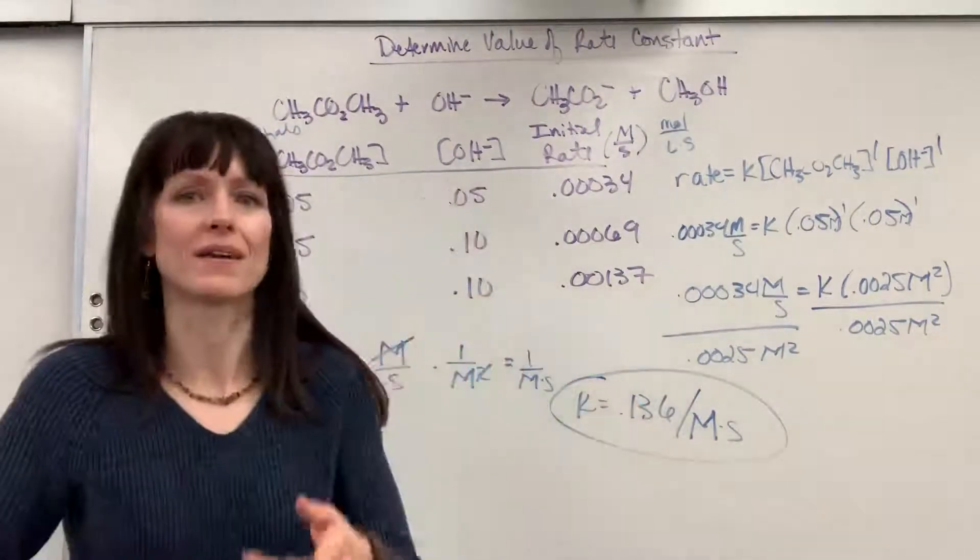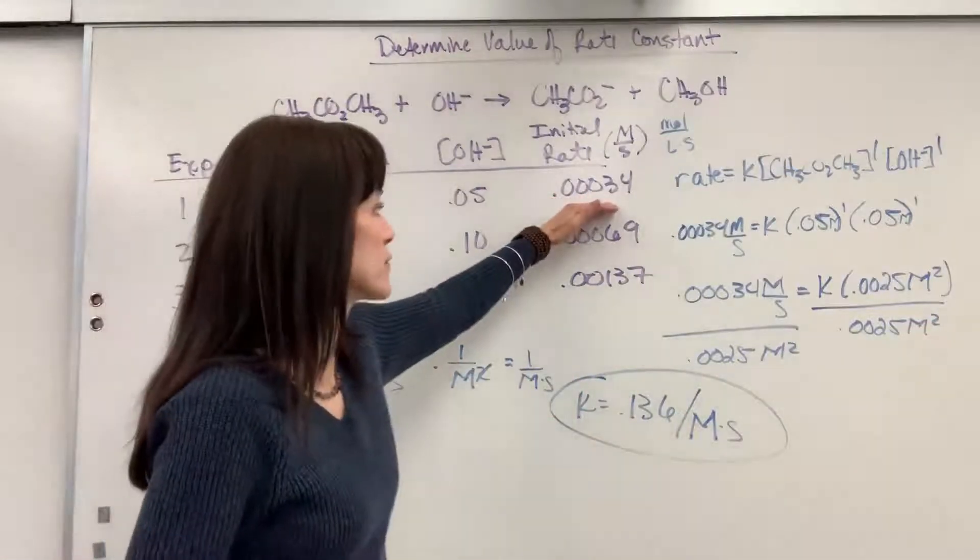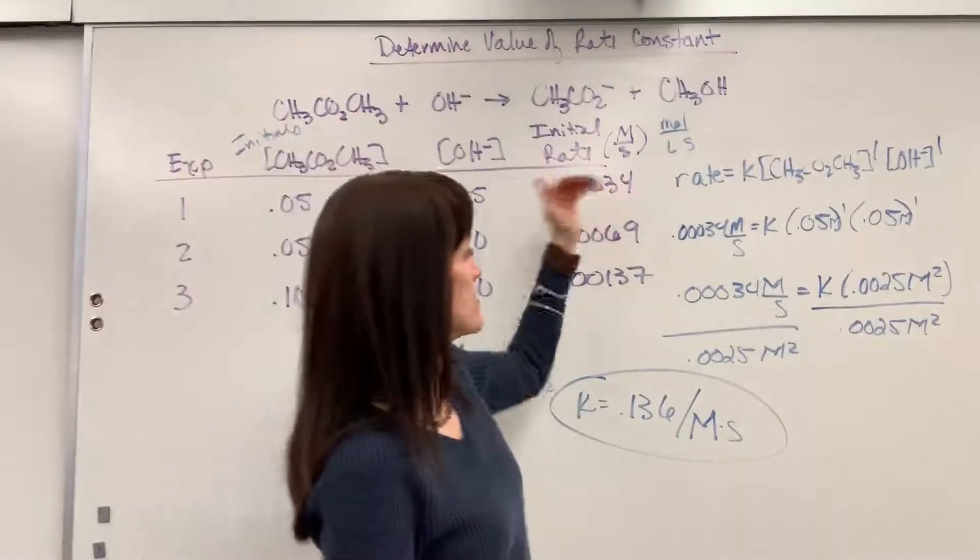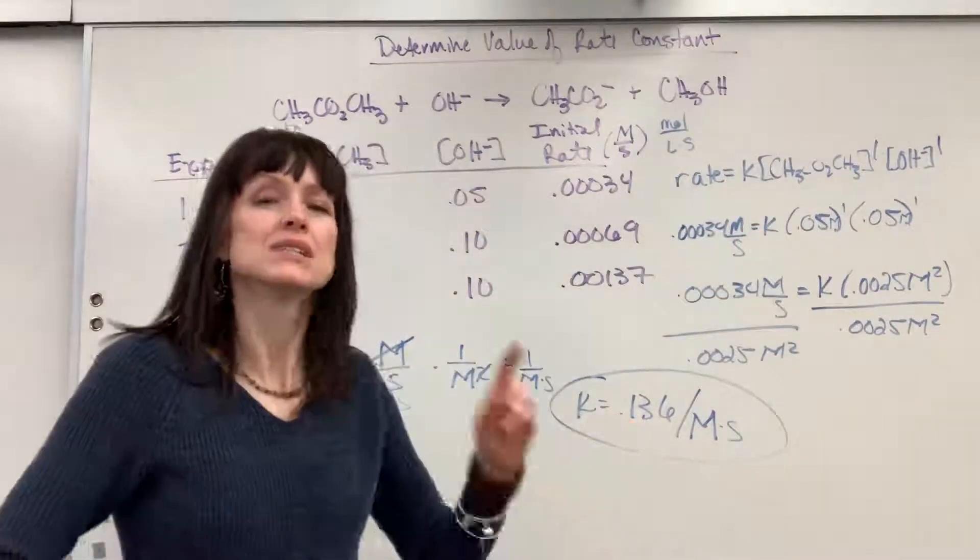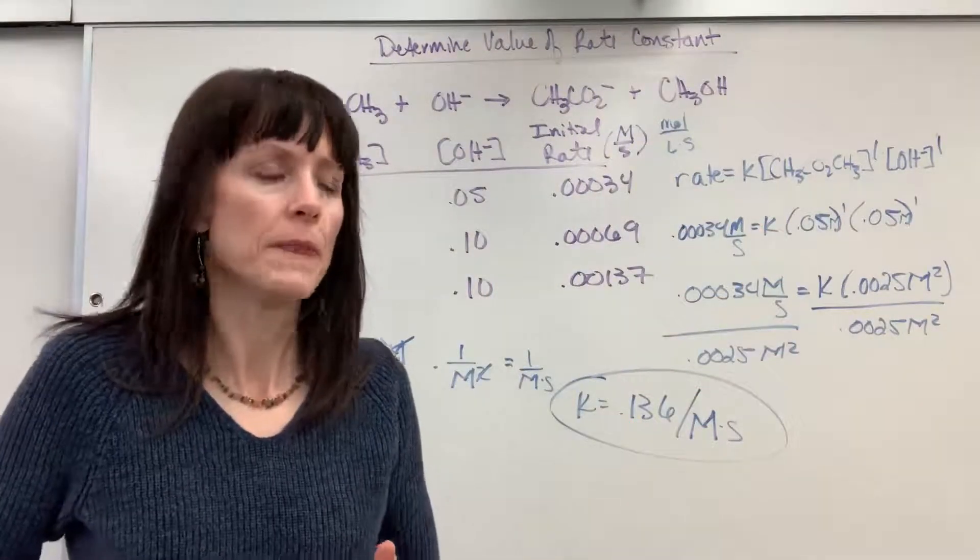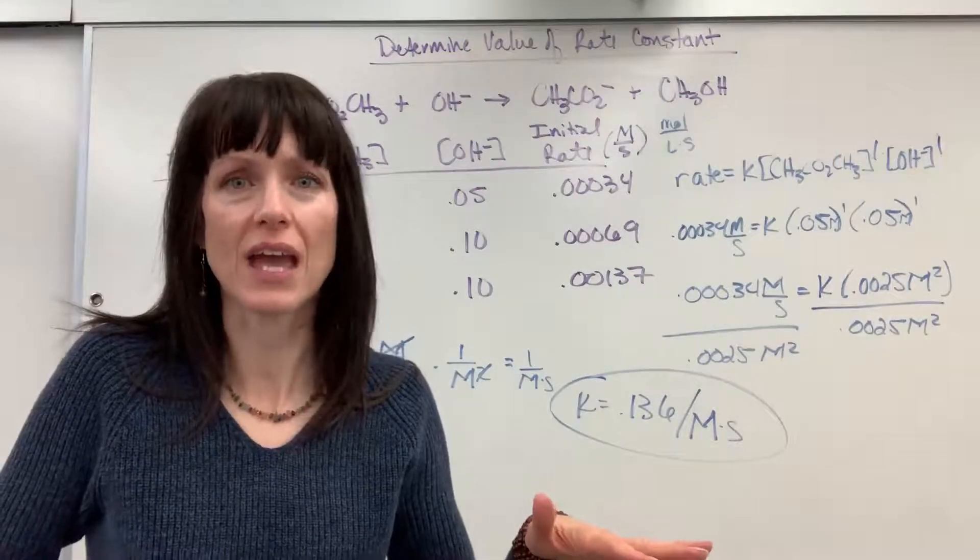Now the number part of that I think is really easy. You just plug in all of the values from one of the trials. It's easy to get that number 0.136. Sometimes the unit is a little tricky. So watch, I have done another video for you just on units for K.